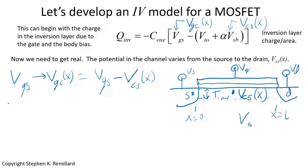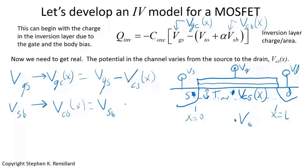For the other substitution, V_SB — the source-body voltage — is replaced with V_CB. The voltage from where you are in the channel to the body equals the voltage from the channel to the source plus the voltage from the source to the body. So V_CB(x) = V_SB + V_CS(x).